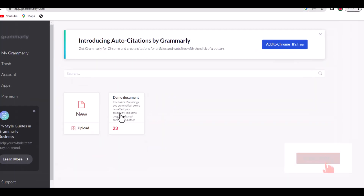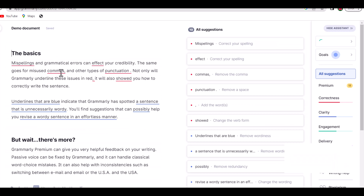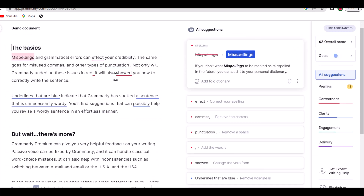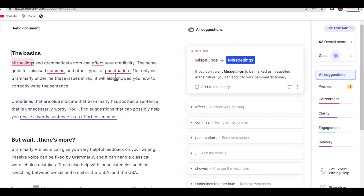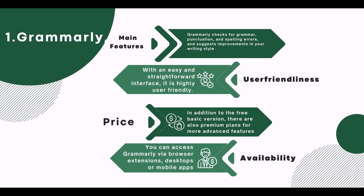1. Grammarly. Main Features: Grammarly checks for grammar, punctuation, and spelling errors, and suggests improvements in your writing style. User Friendliness: With an easy and straightforward interface, it is highly user-friendly. Price: In addition to the free basic version, there are also premium plans for more advanced features. Availability: You can access Grammarly via browser extensions, desktops, or mobile apps.